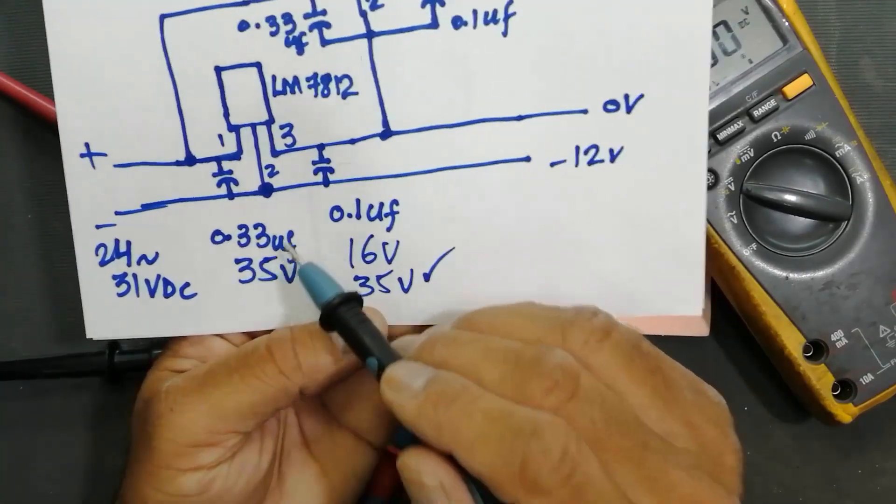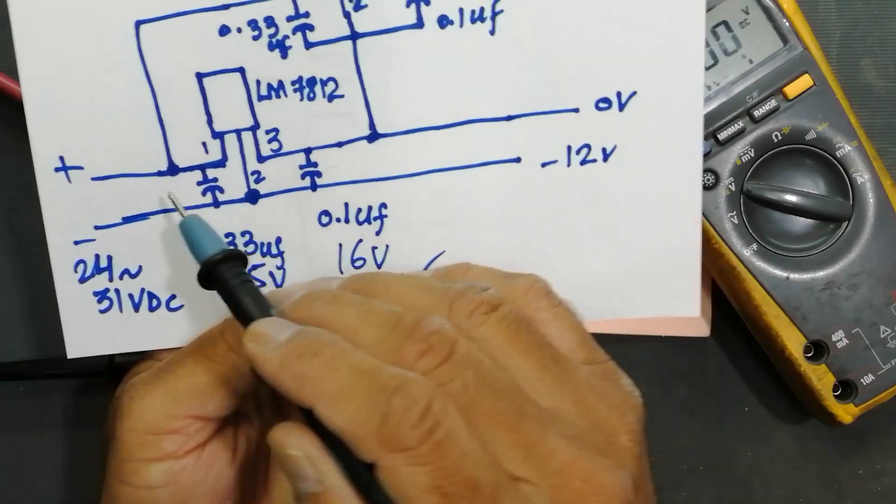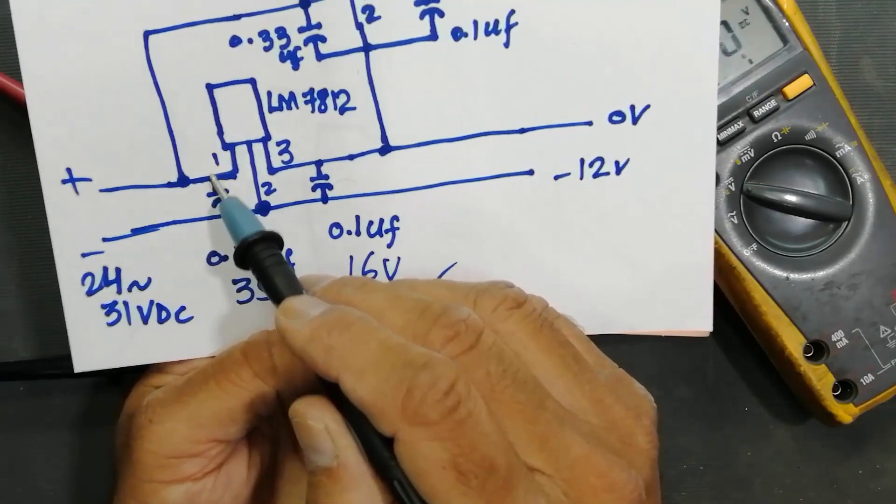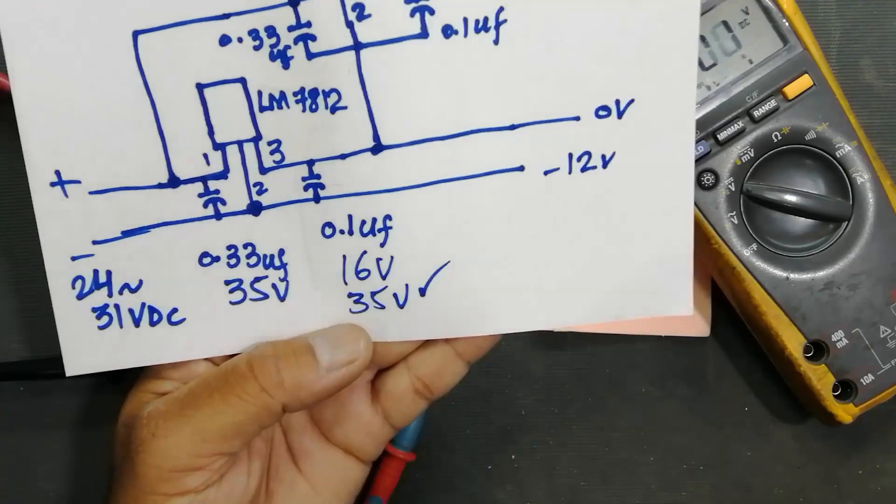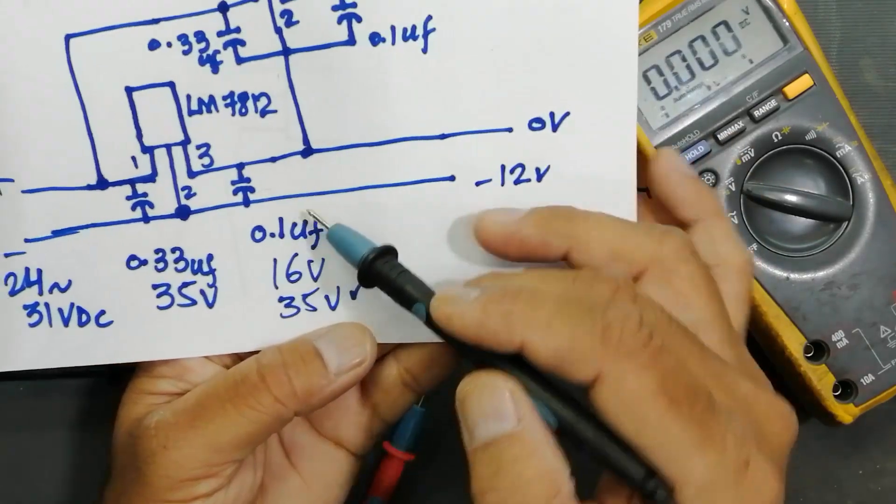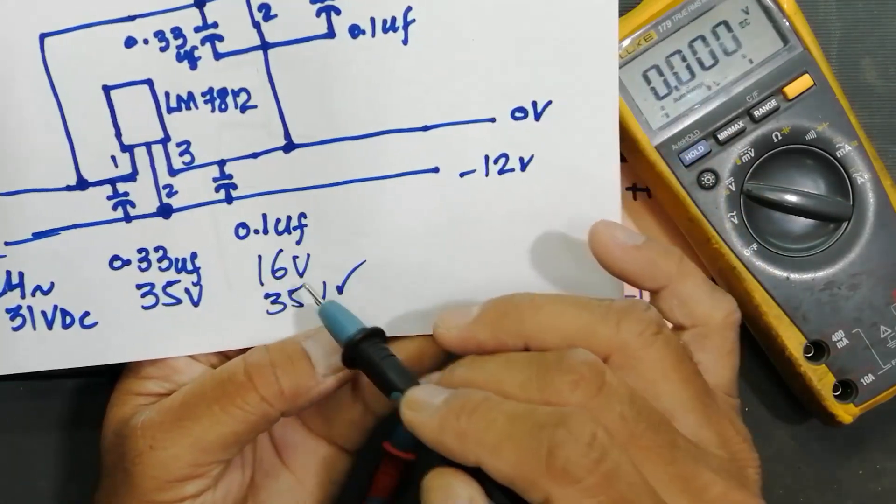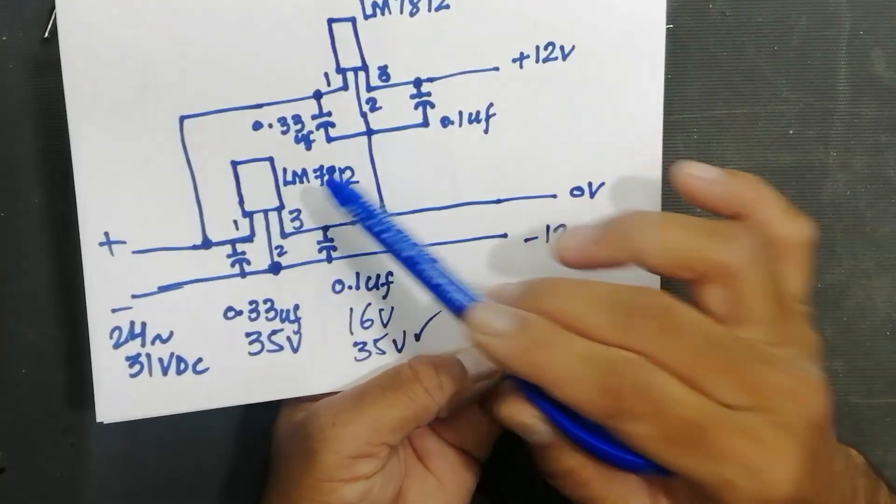0.33 microfarad 35 volt between pin one and two. Positive of the capacitor will be connected to pin number one, ground side or negative terminal connected to pin number two. Pin number three is output and we have to connect 0.1 microfarad 16 volt or 35 volt. 35 is more safe.